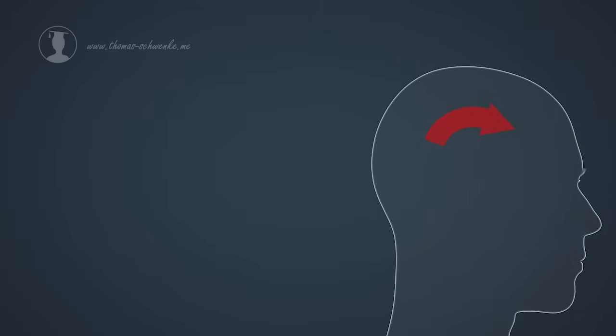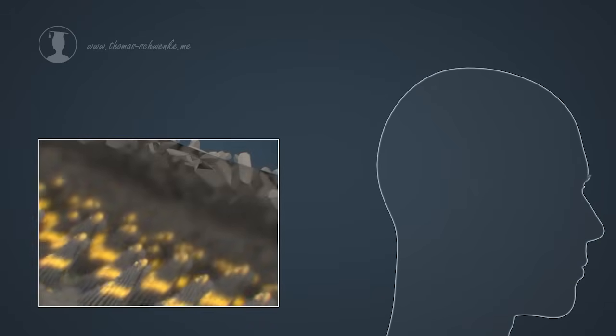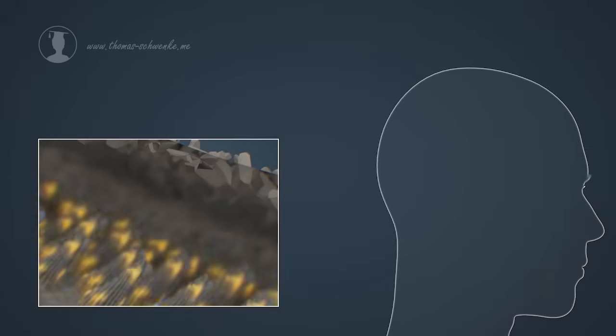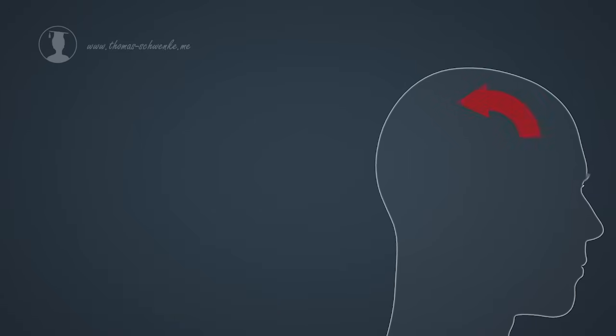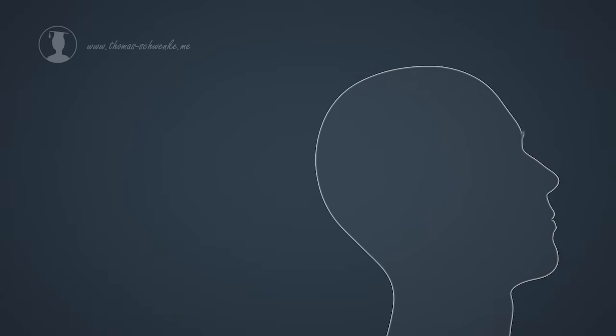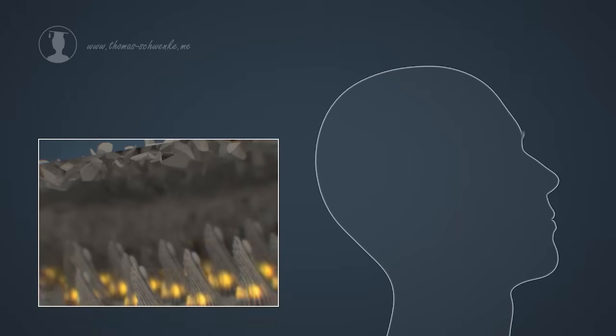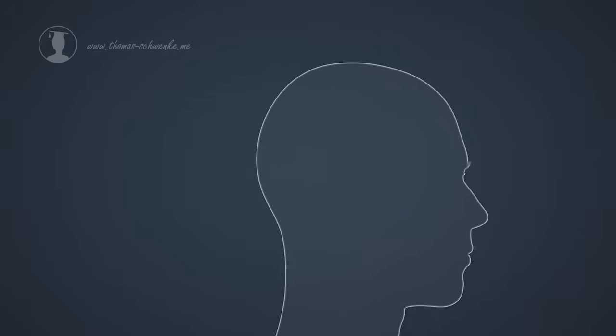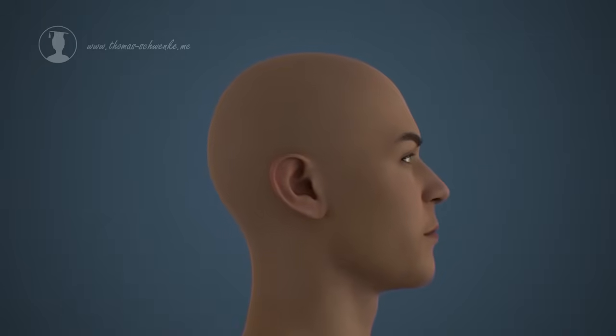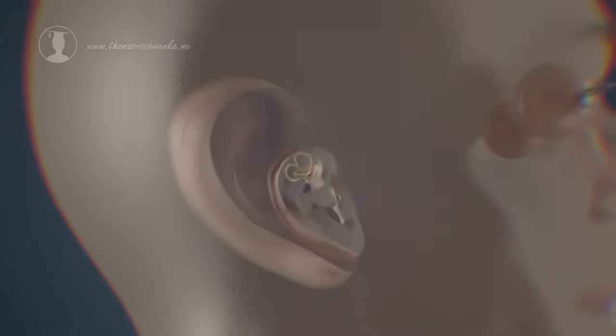The head position can also be determined by utricle and saccule. The Earth's gravity pulls statoliths downwards, and thereby deflects stereocilia of the hair cells. The semicircular canals, which we will look at in more detail in a moment, are necessary for sensing rotational acceleration. But first, let's have a close look at the exact position of each macula.